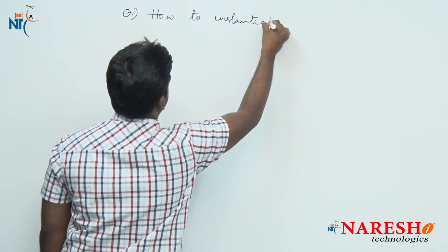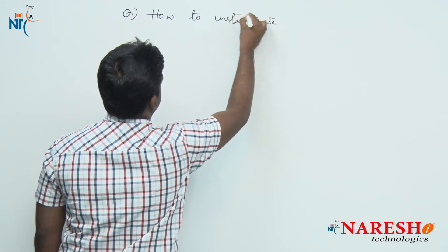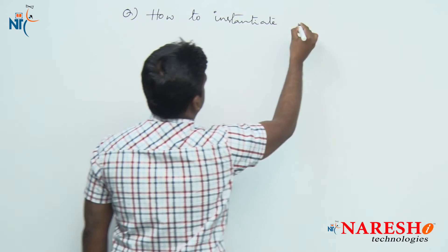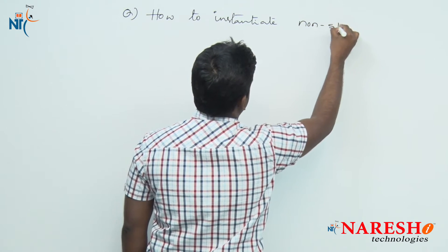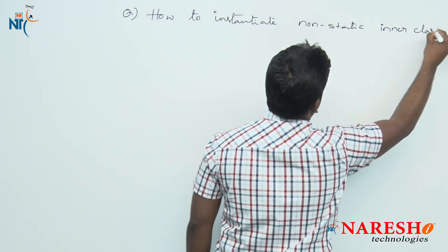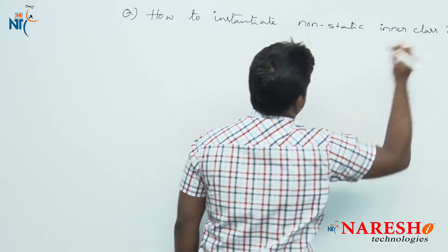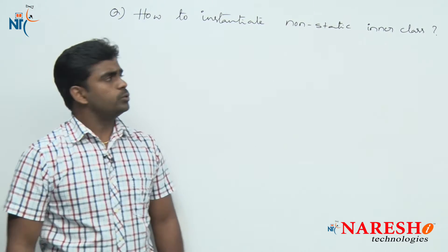The question is: how to instantiate a non-static inner class? How to instantiate a non-static inner class.